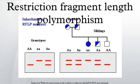The technique for RFLP analysis is, however, slow and cumbersome. It requires a large amount of sample DNA, and the combined process of probe labeling, DNA fragmentation, electrophoresis, blotting, hybridization, washing, and autoradiography could take up to a month to complete.